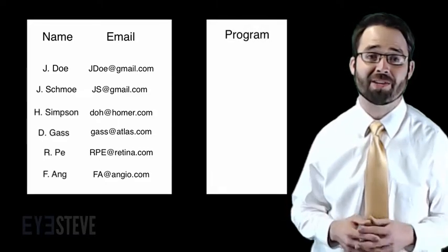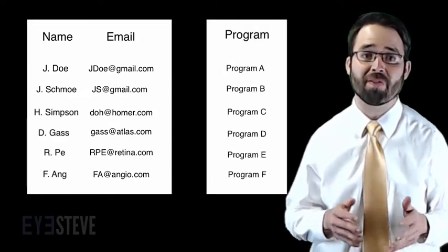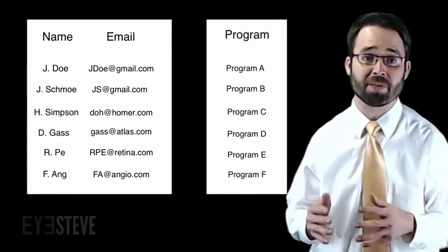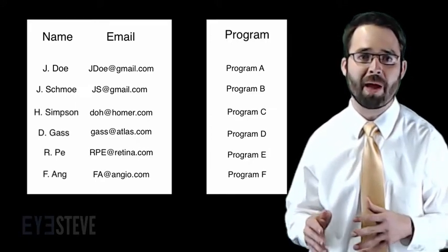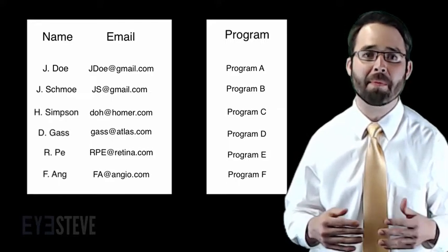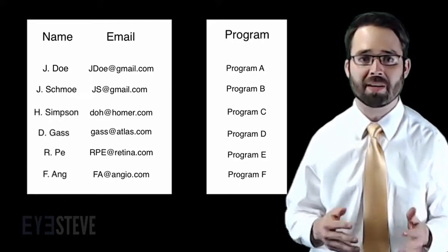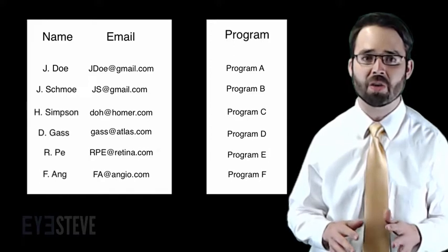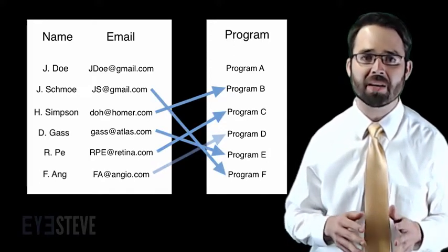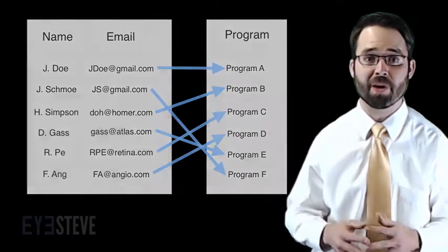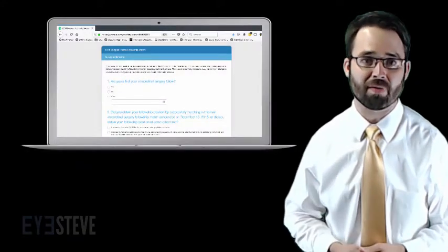After the match, I used a master list of all programs offering fellowship positions in the match and I compared it to my list of colleagues and where they had matched. And I then made many personal phone calls, sent emails, text messages, etc. to try and figure out where everyone had matched and to discover their contact information. I then sent everyone whose contact info I could obtain an anonymous online survey.